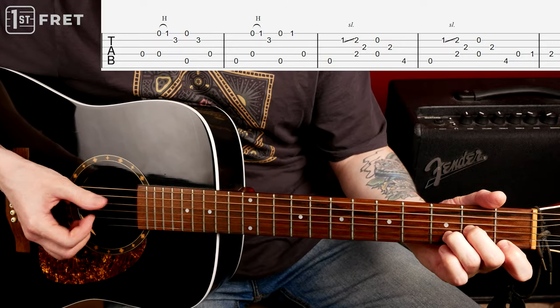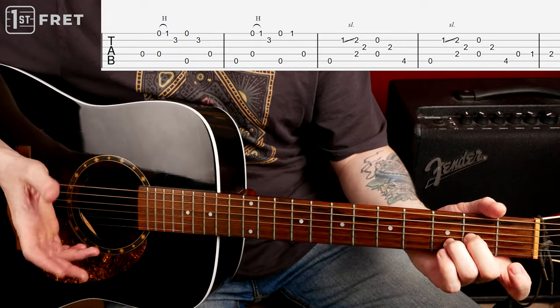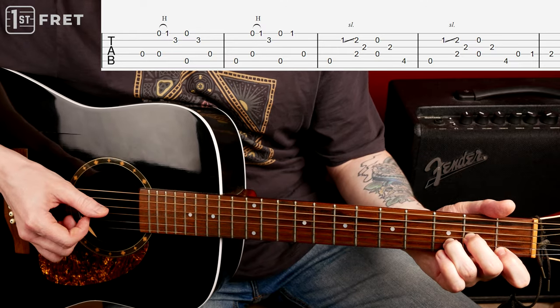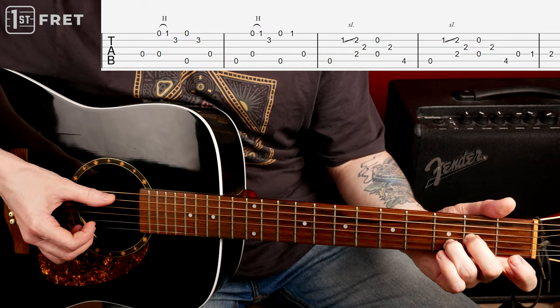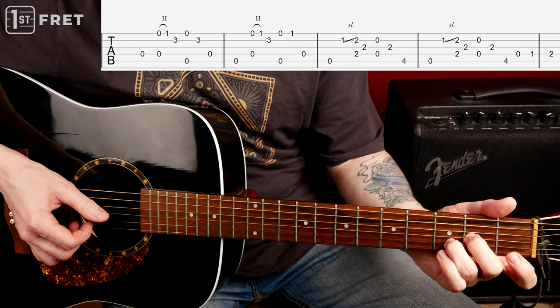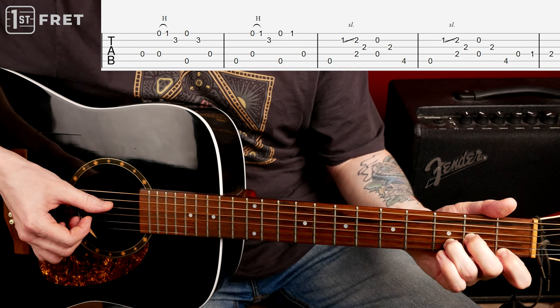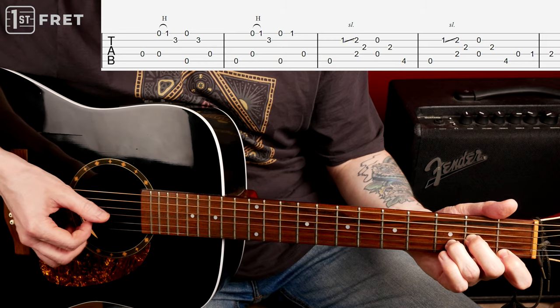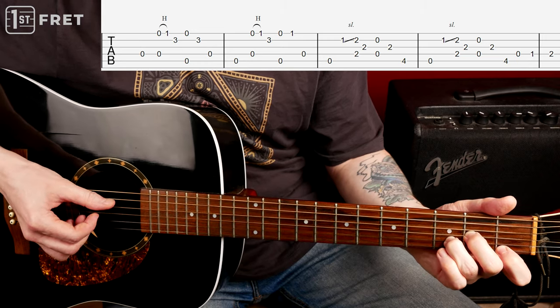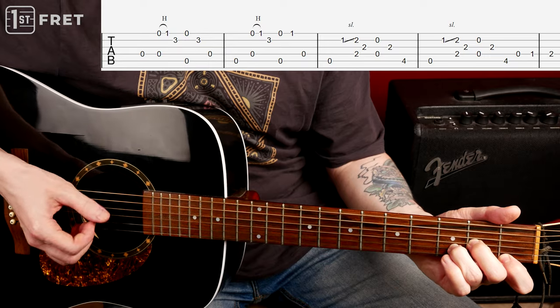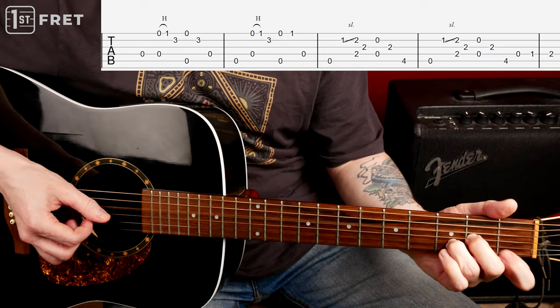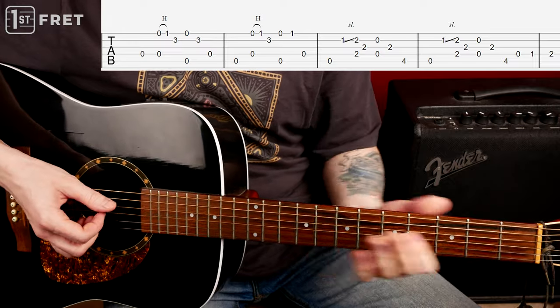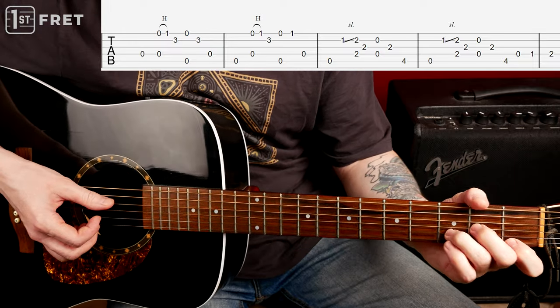5th bar: we play the same way we played before, the D string with this quick hammer on, bass changing, the B string, the D and the A again. And second time we play, we change melody and we play note like this.